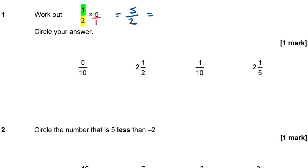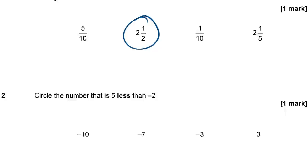So top times top equals 1 times 5 which is 5, and bottom times bottom is 2. So a half times 5 is the same thing as 5 halves — that's an improper fraction. To rewrite that as a mixed number, you're looking at how many times 2 divides into 5. 5 divided by 2 is 2 remainder 1, so the answer is 2 and a half.